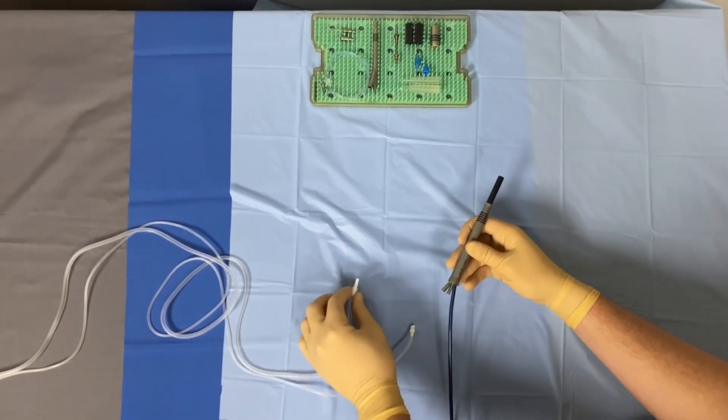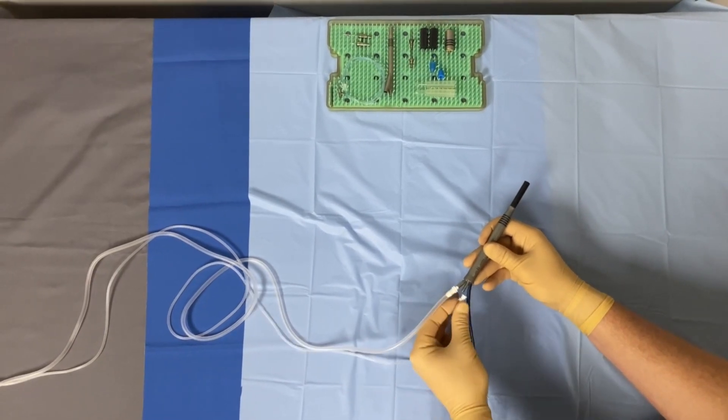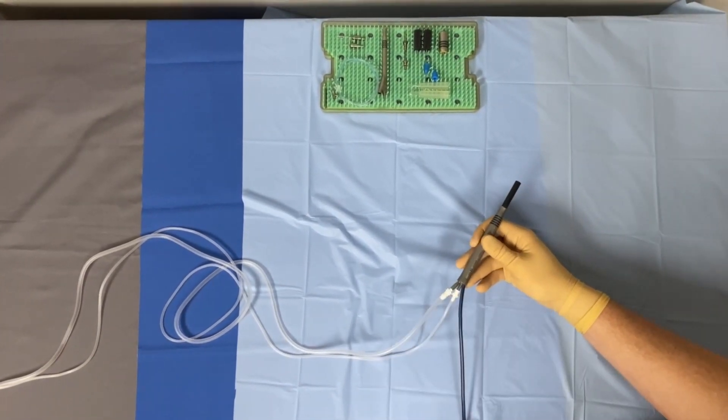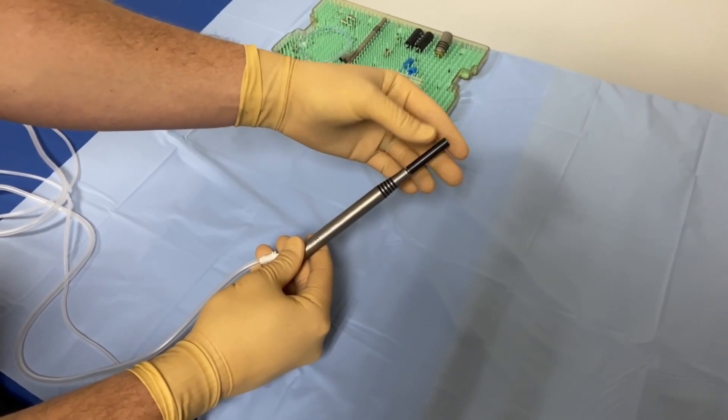Connect the irrigation and aspiration lines to the ports on the FACO handpiece. Make sure that the connections are secure. Unscrew the protective cap from the FACO handpiece.